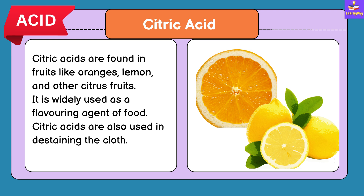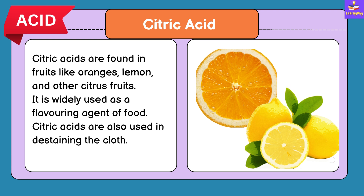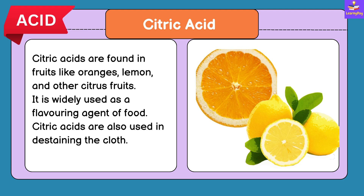Coming on to Citric Acid: Citric acids are found in fruits like oranges, lemons and other citrus fruits. Citric acid is widely used as a flavouring agent of food and is also used in de-staining cloth.